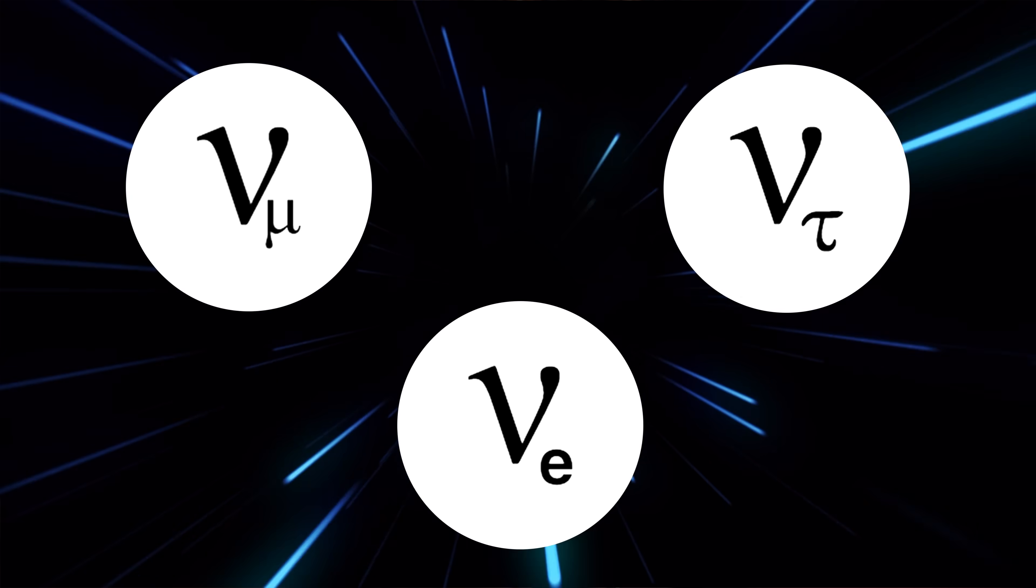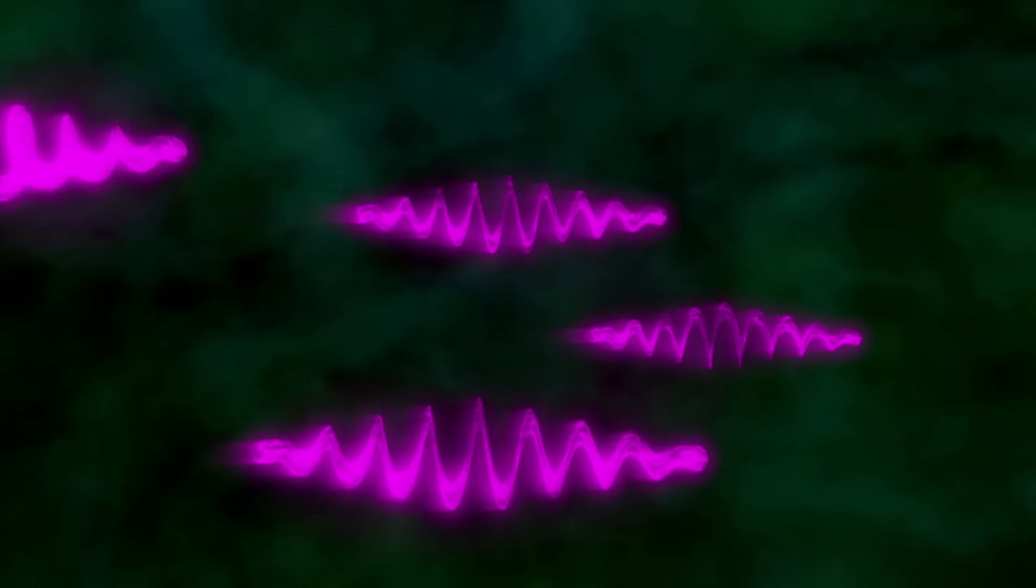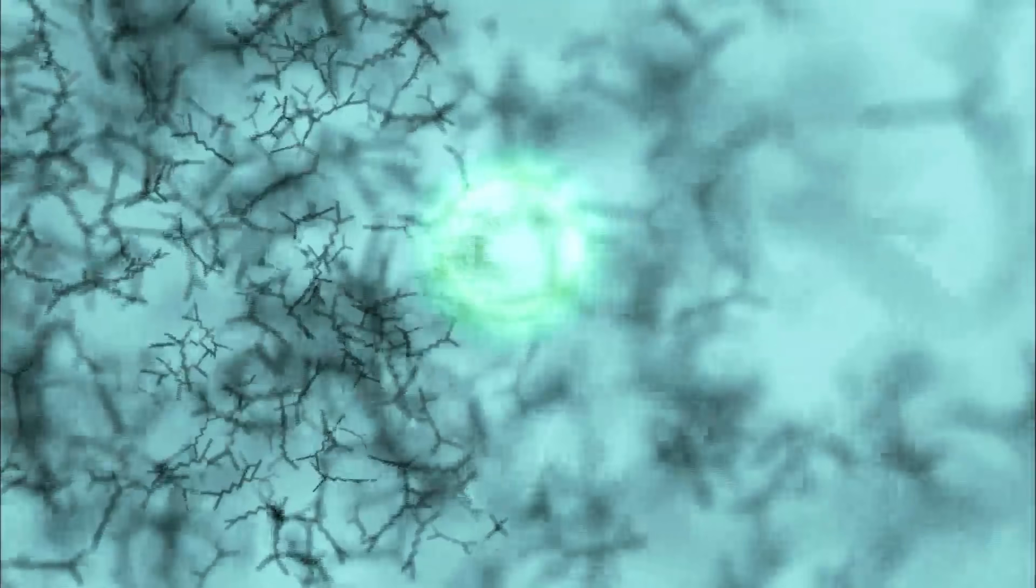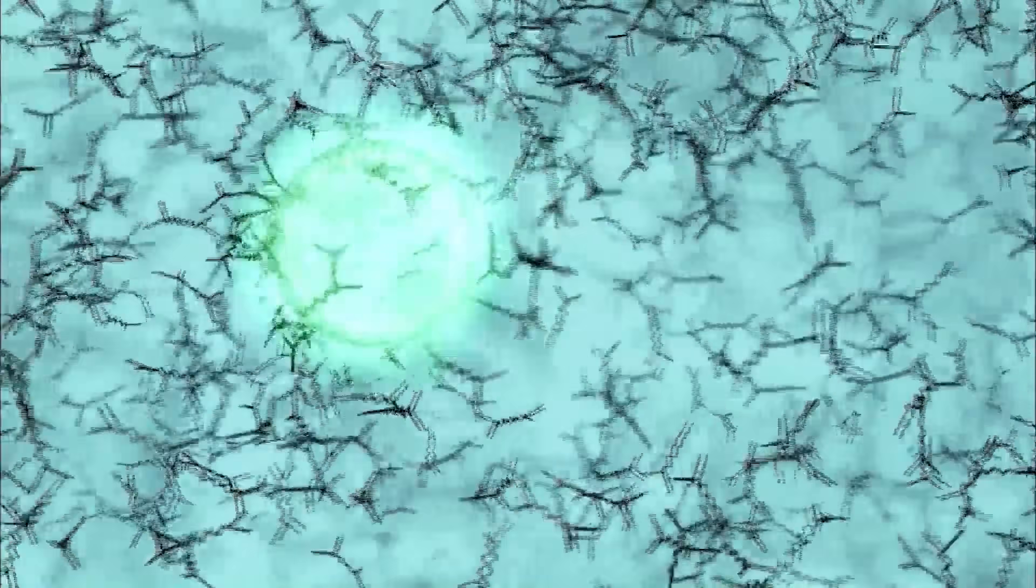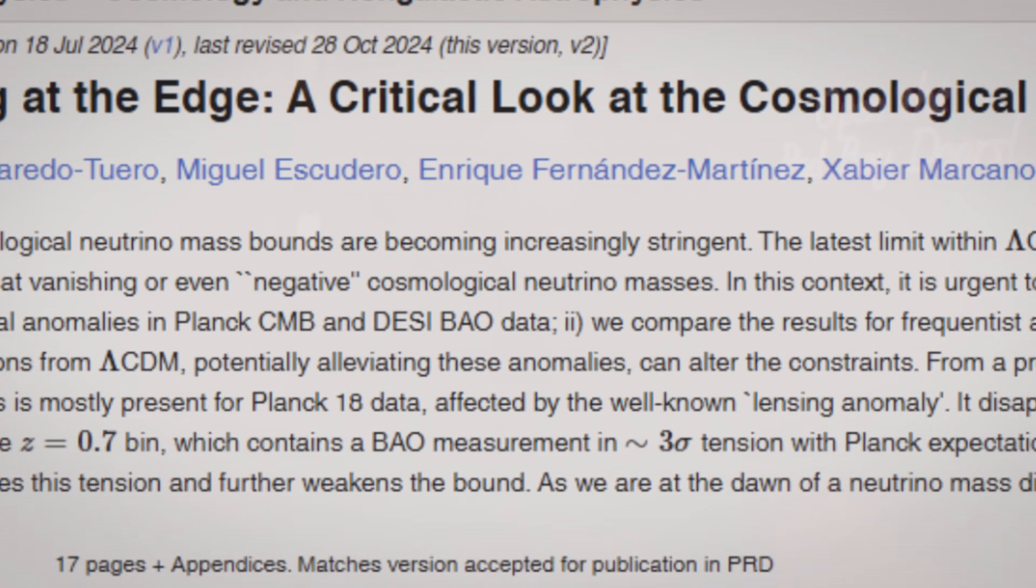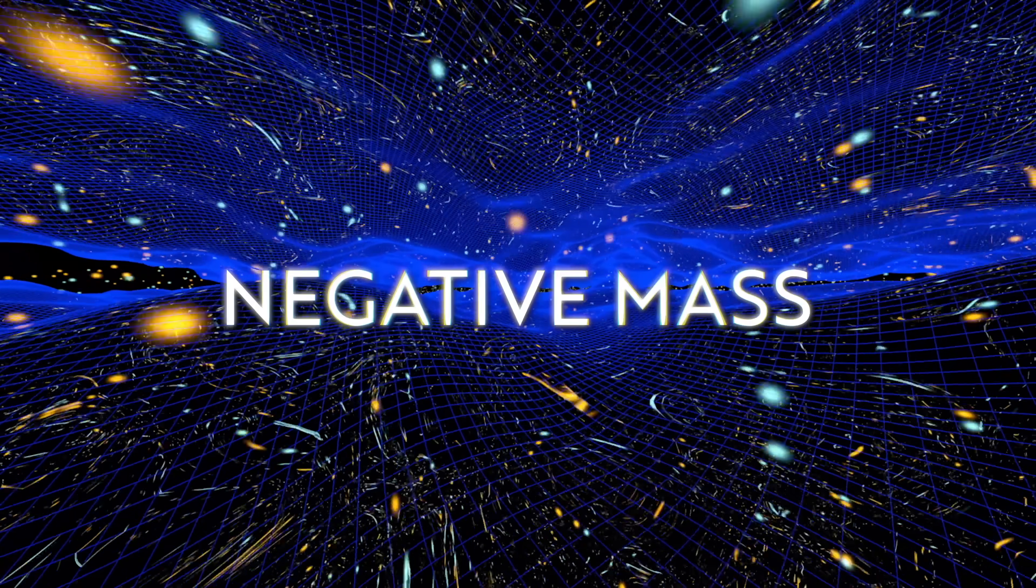Neutrinos are so obscure and difficult to detect that they break our current theories of modern physics. Do they have no mass, like a photon? Do they have a tiny amount of mass, so small that it barely interacts with the Higgs field? Or could they, as suggested by recent findings based on data from the DESI survey, even have negative mass? A concept so bizarre that it defies explanation.